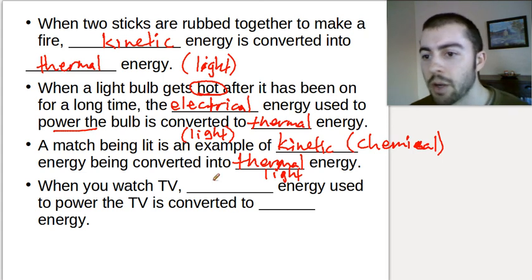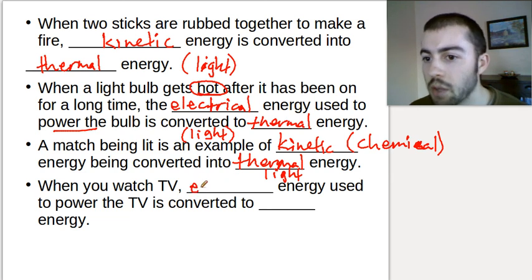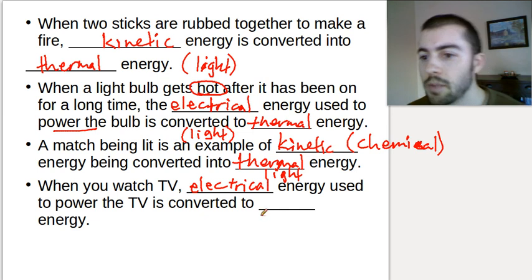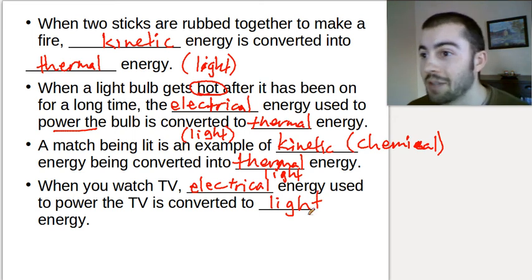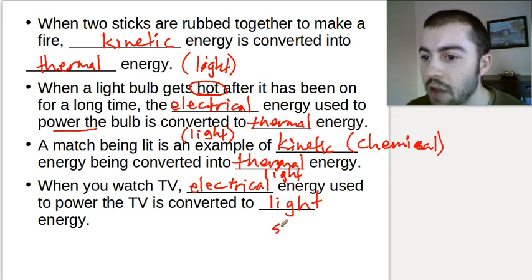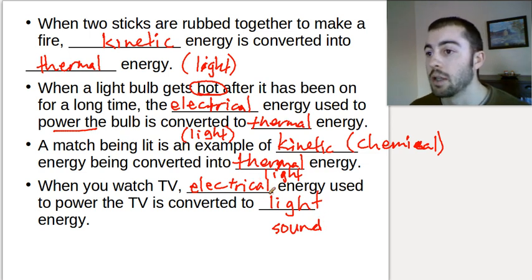When you watch TV, the electrical energy — because you plug it into the wall — is converted into light energy, because the TV lights up and that's how we can see it, and also sound energy that we get from the TV. So both light and sound energy are converted from the electrical energy used to power the TV.